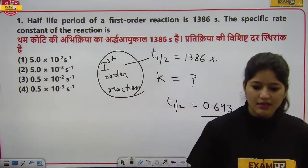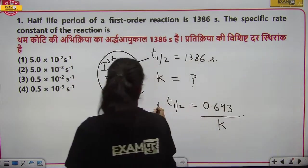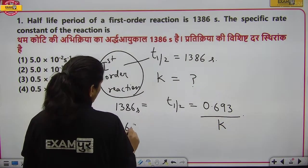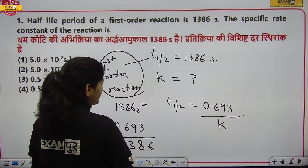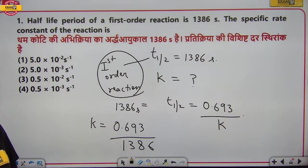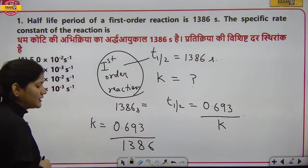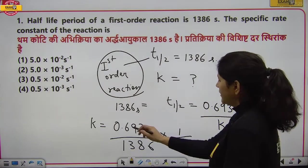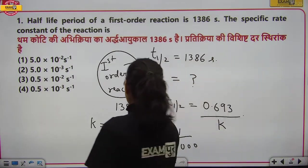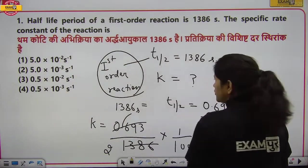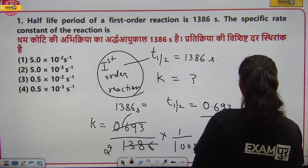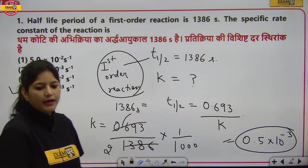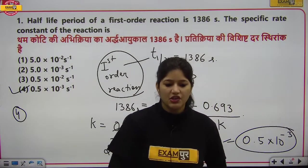t½ = 0.693/K, t½ आपको दिया है 1386 second। यहाँ से K निकालो: K = 0.693/1386। Point को हटाओ और 1000 करो, तो यह 2 से चला जाएगा, 1/2 हो जाएगा। तो यह होगा 0.5 × 10⁻³ second inverse, जो fourth option में नजर आ रहा है।